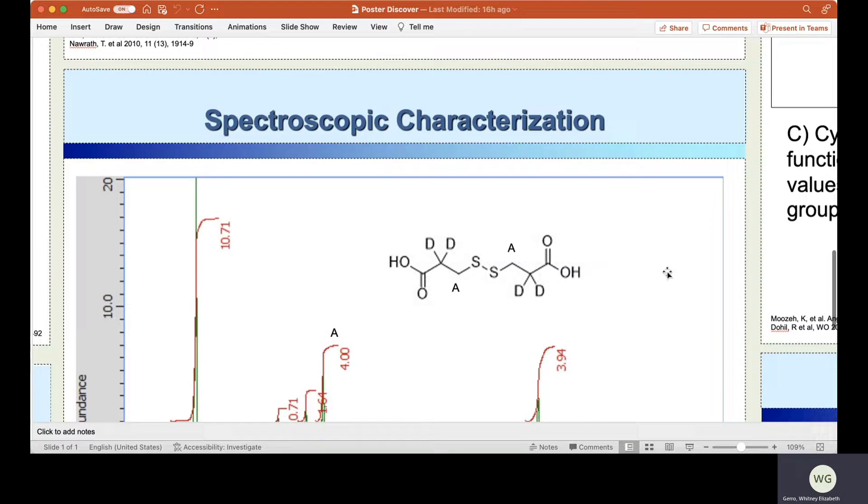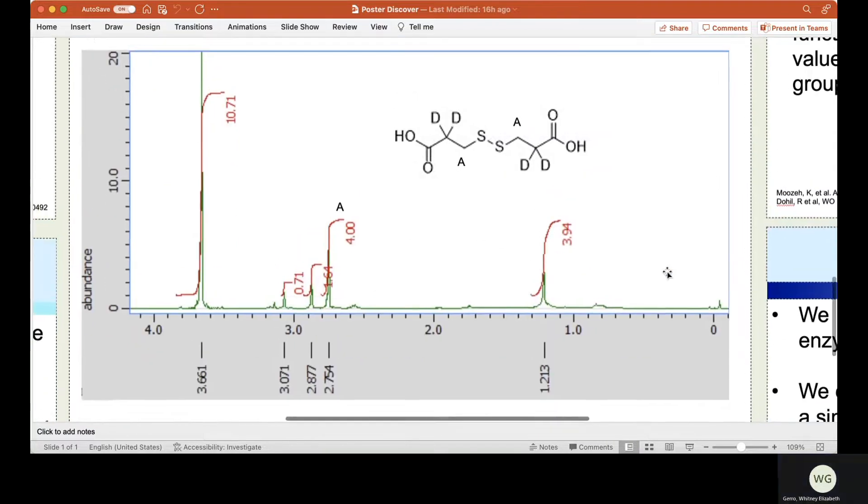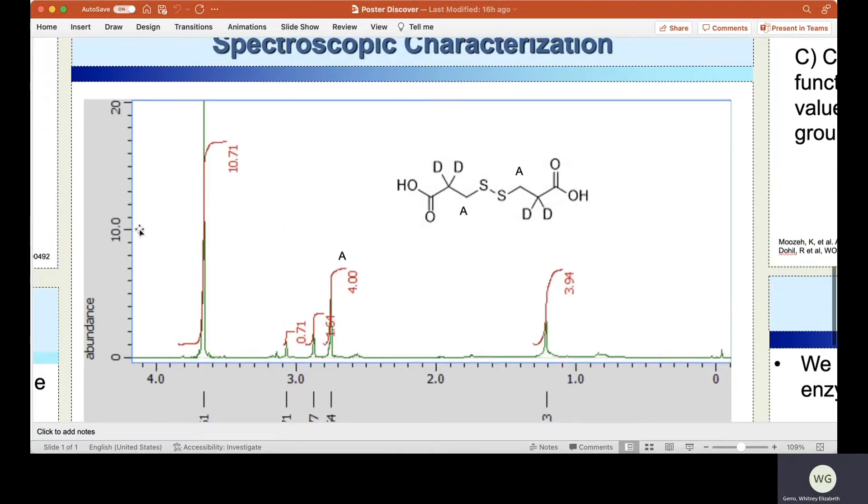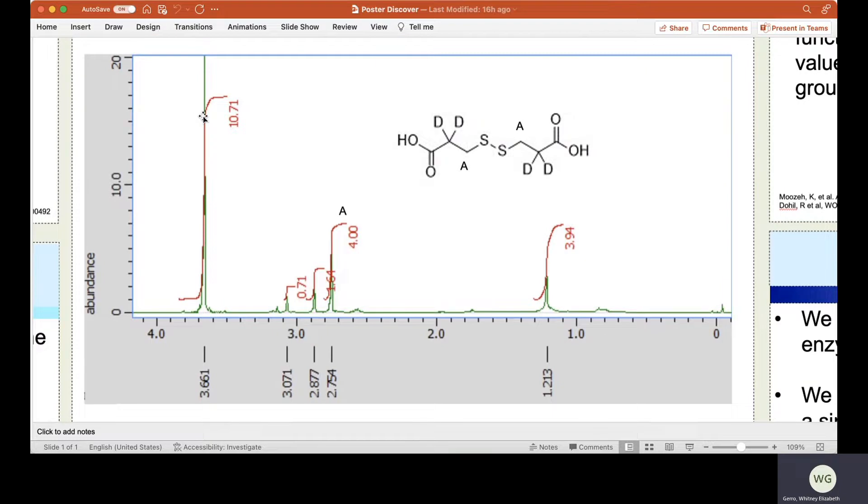Looking at our spectra, beginning with our NMR spectrum, starting here on the far left, we see the methanol the reaction was running with its characteristic peak at 3.661. However, what is of interest to us is peak A, which corresponds to the protons on the beta carbons of our molecule. We also see other peaks, which sadly indicate the presence of compounds that are not our molecule.